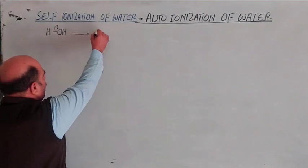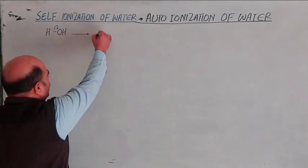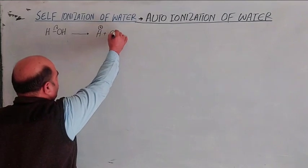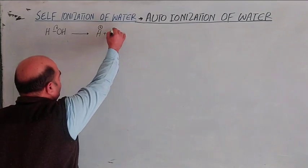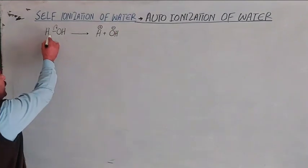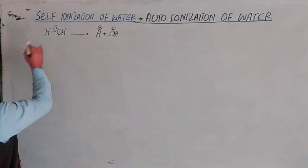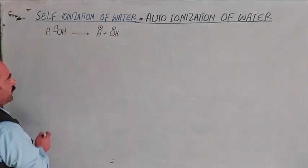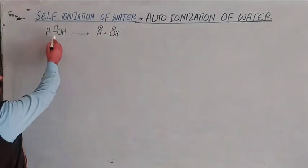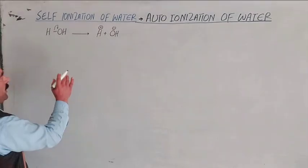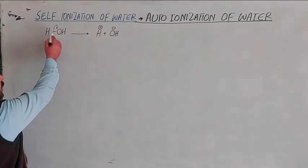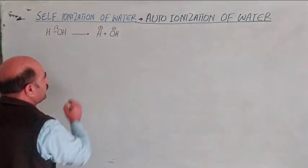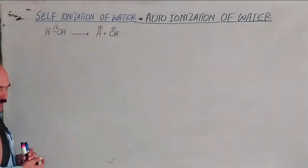Water ionizes to form a hydrogen ion and a hydroxide ion. In the bond, the electron of hydrogen shifts away — the electron leaves hydrogen, giving it a positive charge. The oxygen keeps both bonded electrons plus accepts hydrogen's electron, and the negative charge resides on it.